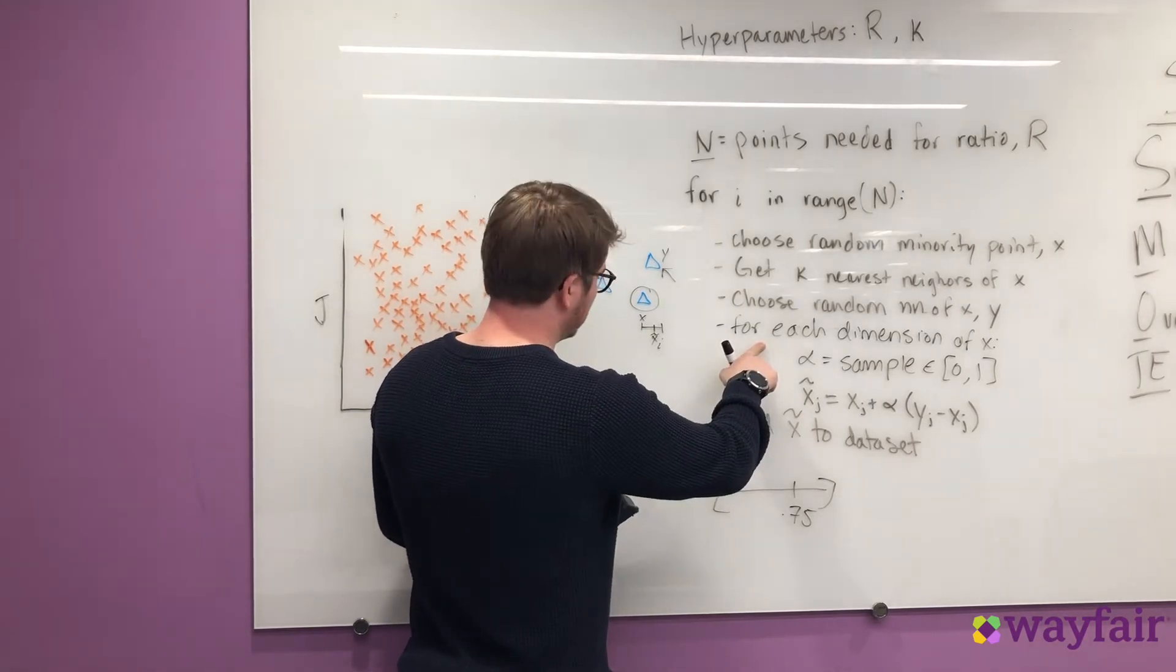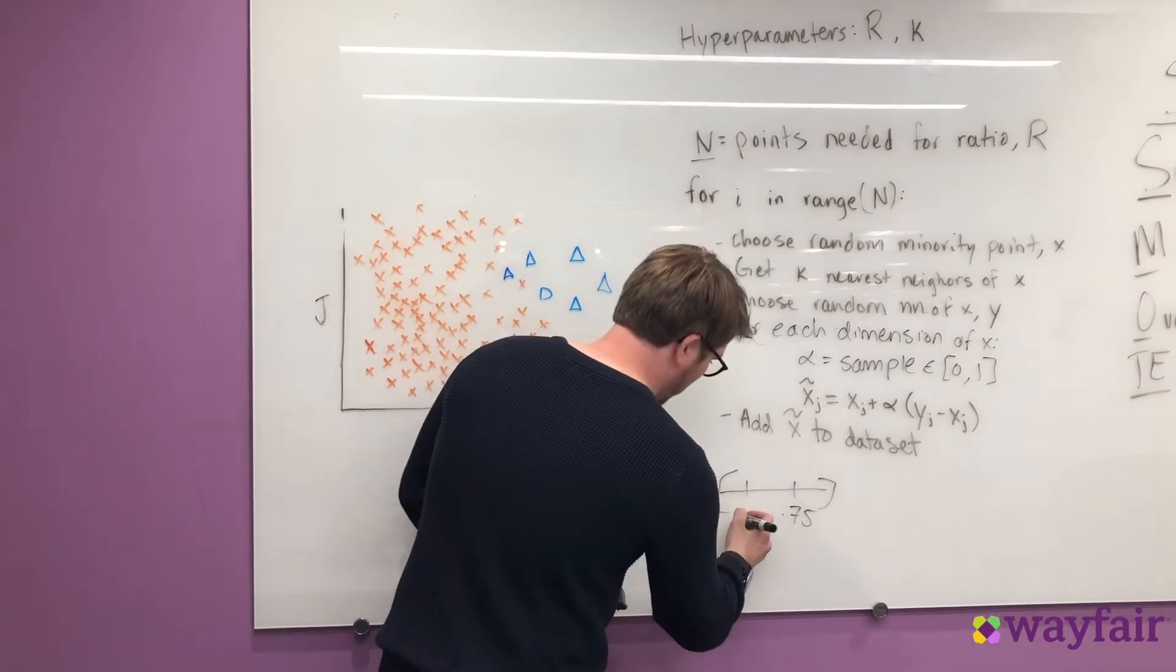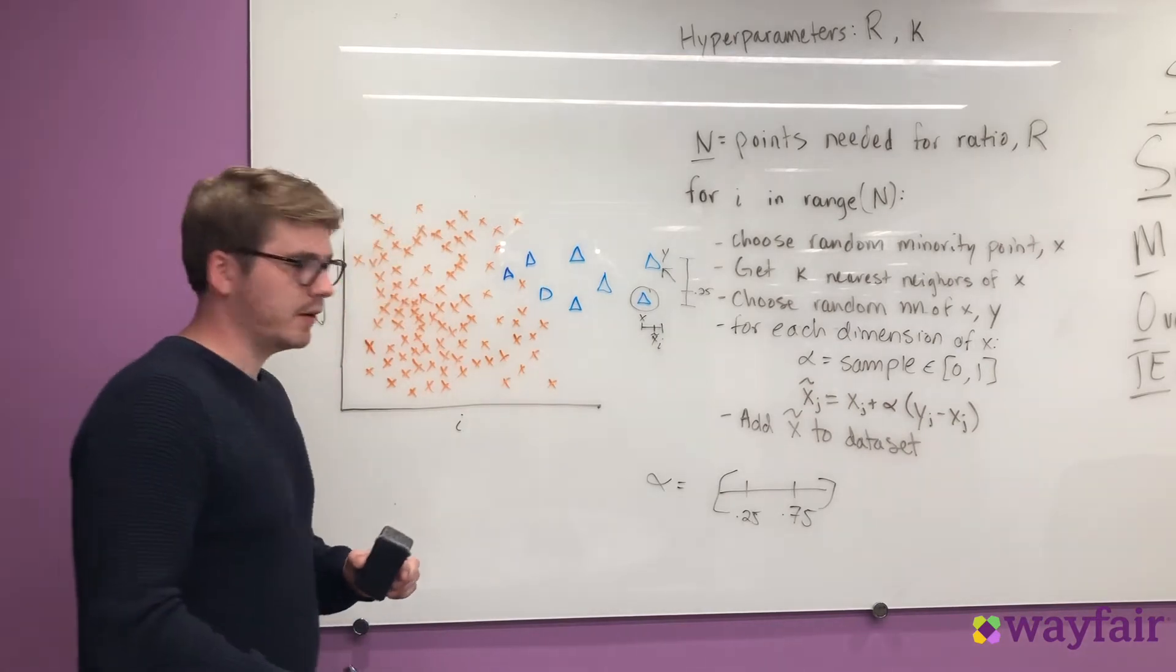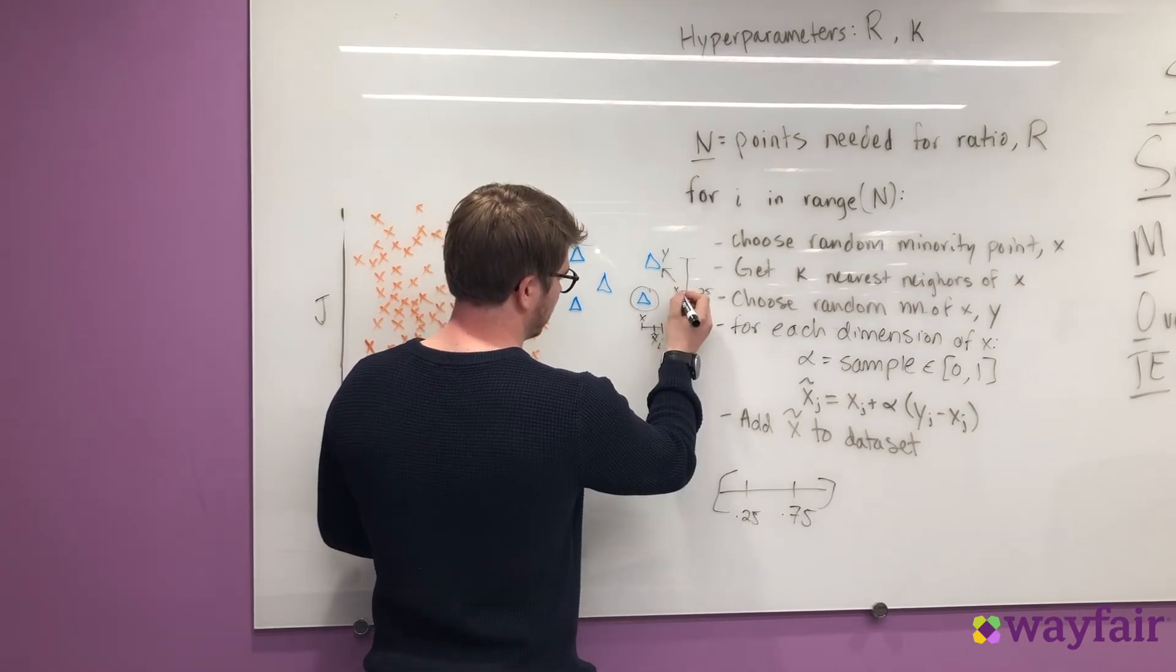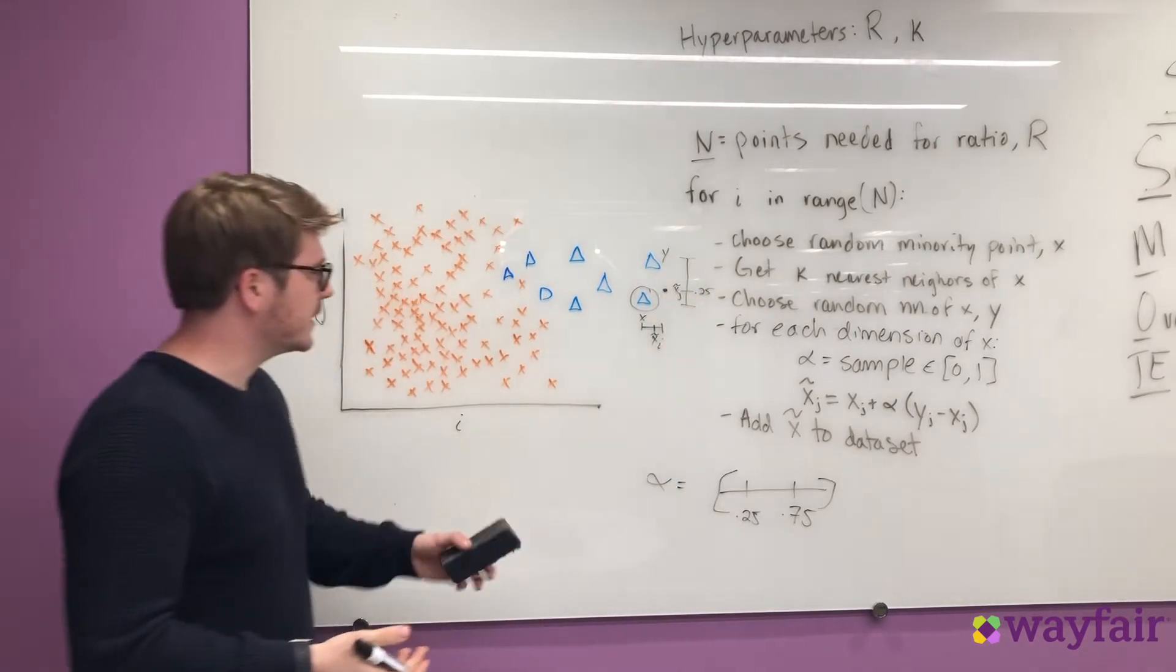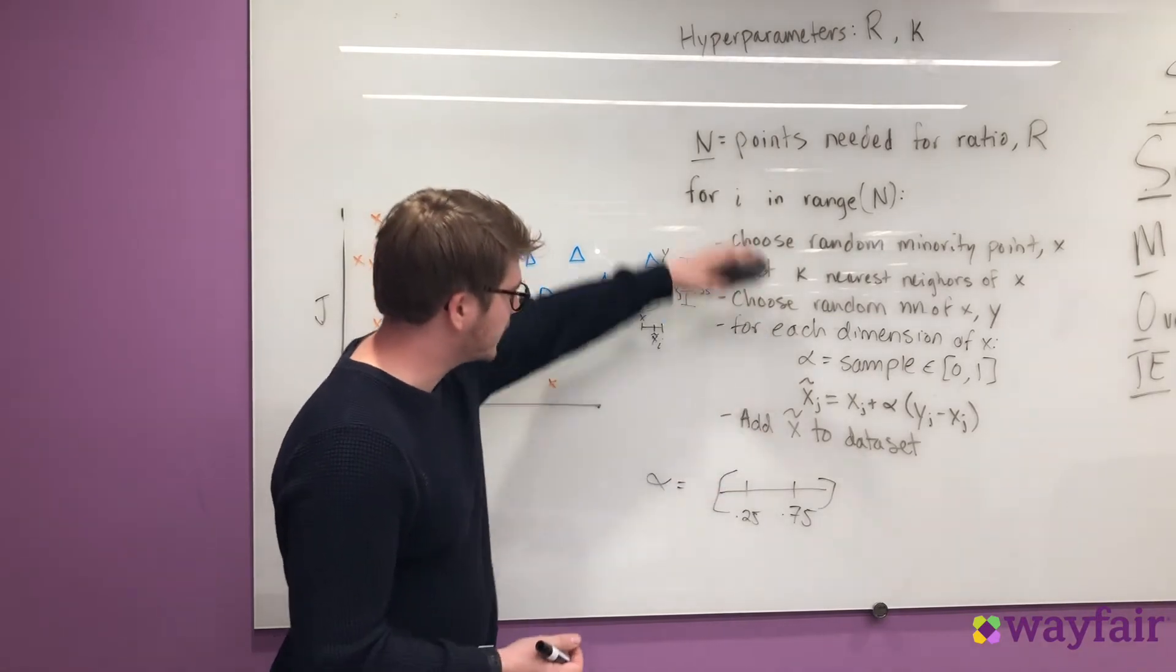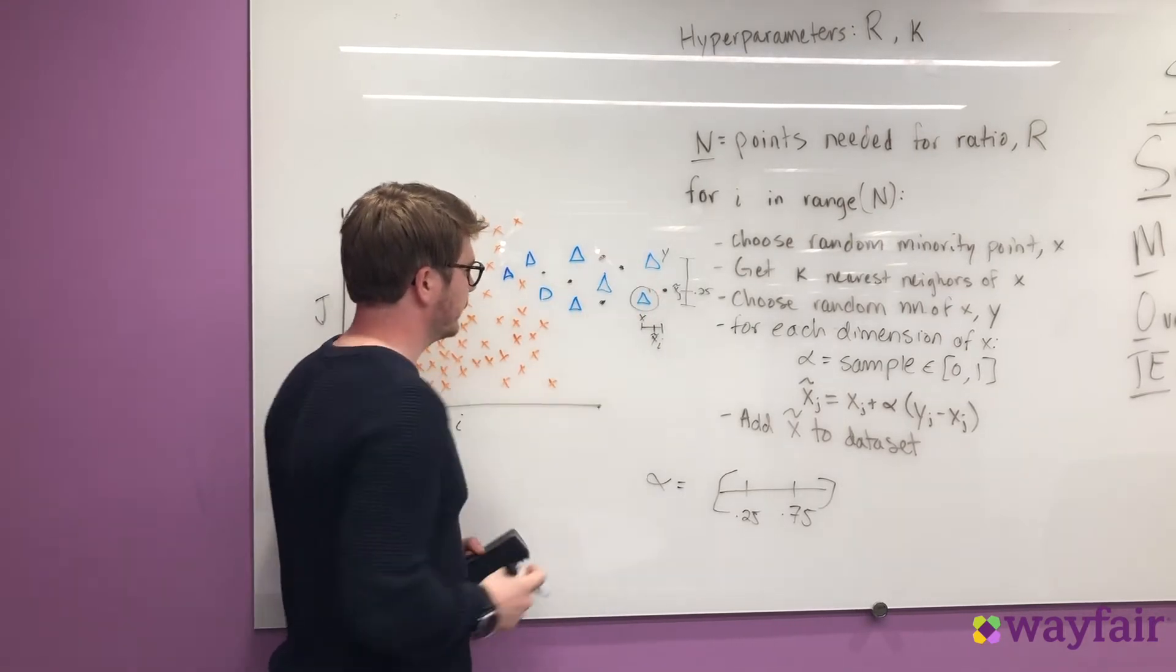So we're iterating through each dimension of our data set, which means we also need to look at this dimension, the j dimension. Once again, let's pick alpha. Maybe we get 0.25 this time. And then we add alpha times the distance between these two values. And now, since we've iterated through both the dimensions, and we've set the X tilde value in both those dimensions, we can create this new synthetic point. What's nice about this is that we've created a synthetic point that's very close to our minority cases. We're then going to iterate over this process and many times until we have a bunch of synthetic points. And then we can train our model.